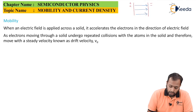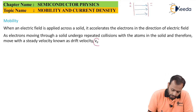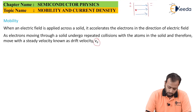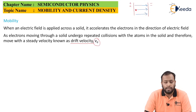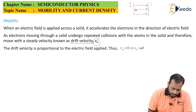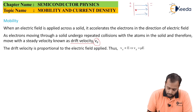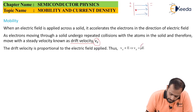As electrons move through the solid, they undergo repetitive collisions with the atoms in the solid and therefore move with a steady velocity known as drift velocity, denoted as Vd. The electron continuously collides with atoms and other electrons, hence it moves with a steady drift velocity. The drift velocity is proportional to the electric field — the stronger the electric field, the greater the force driving the electron. So Vd is directly proportional to E, which means Vd = μE, where μ is mobility.